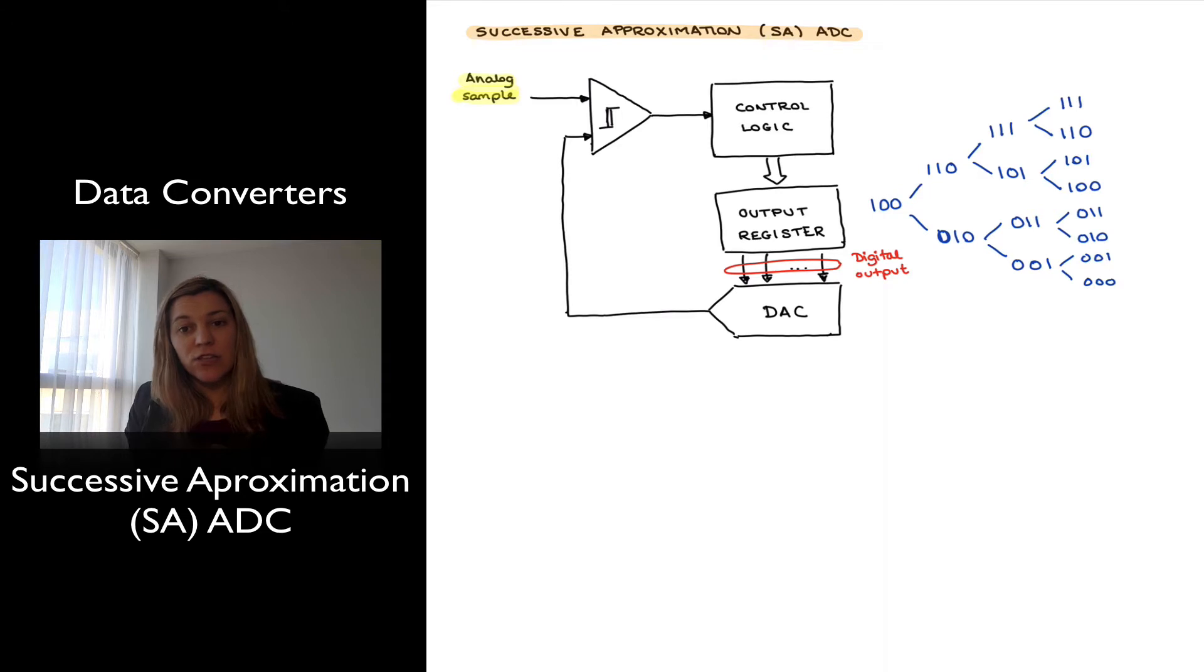But instead of doing it as in the case of the ramp, by counting from zero all the way to the maximum number when all the bits are set to one, we're going to do it more as a binary search.